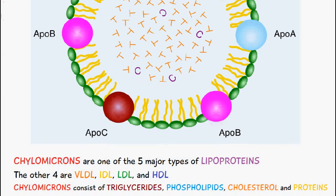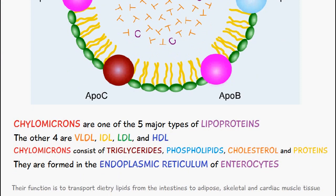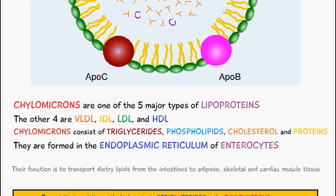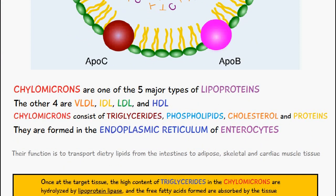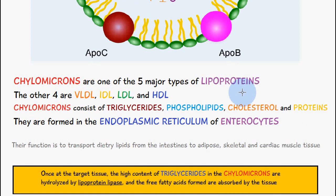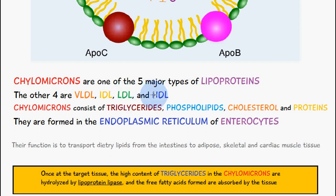Chylomicrons are one of the five major types of lipoproteins. The other four types are very low density lipoproteins, intermediate density lipoproteins, low density lipoproteins, and high density lipoproteins.